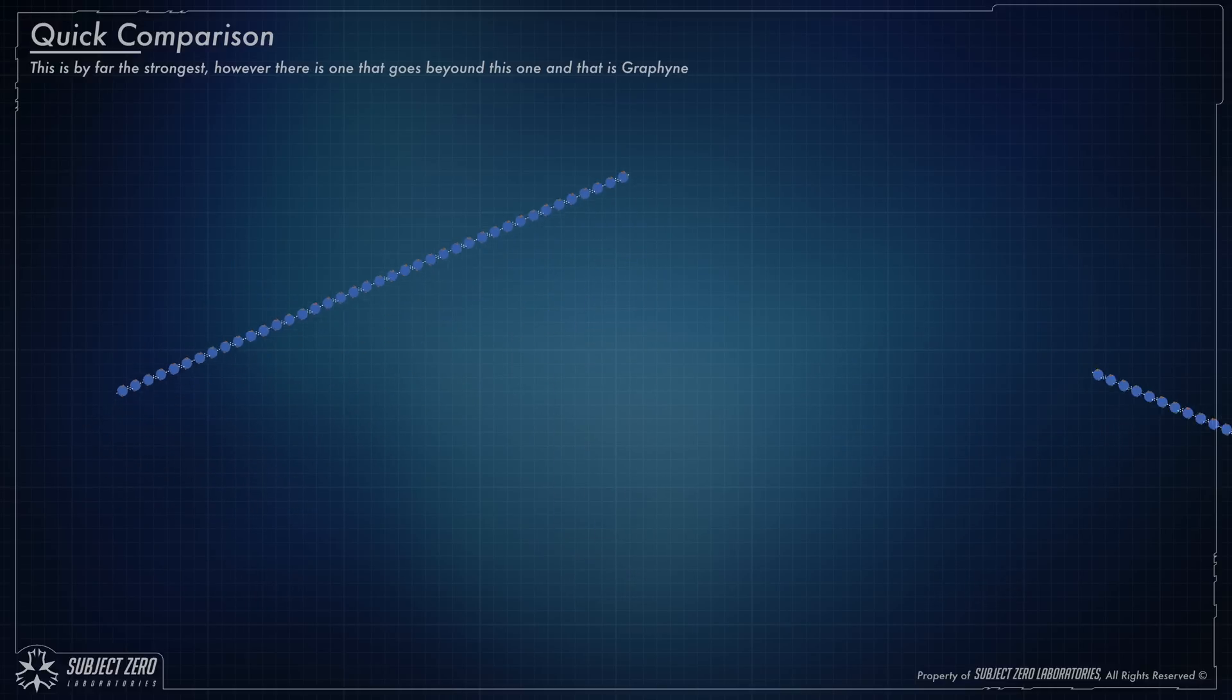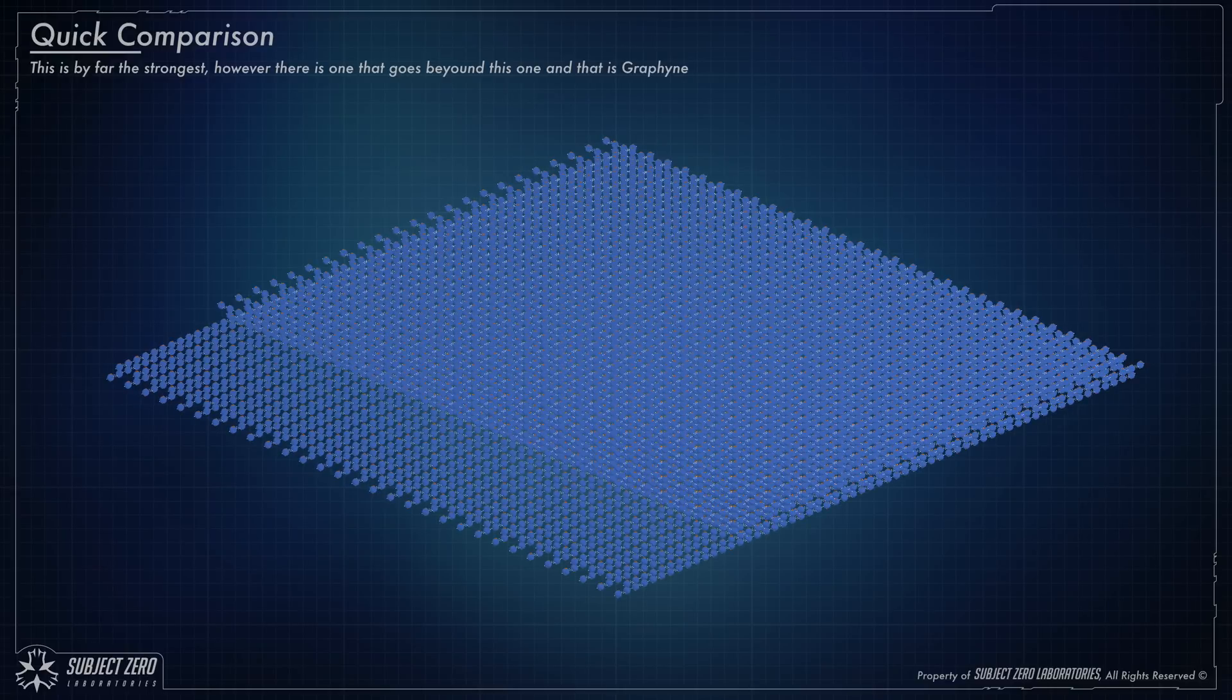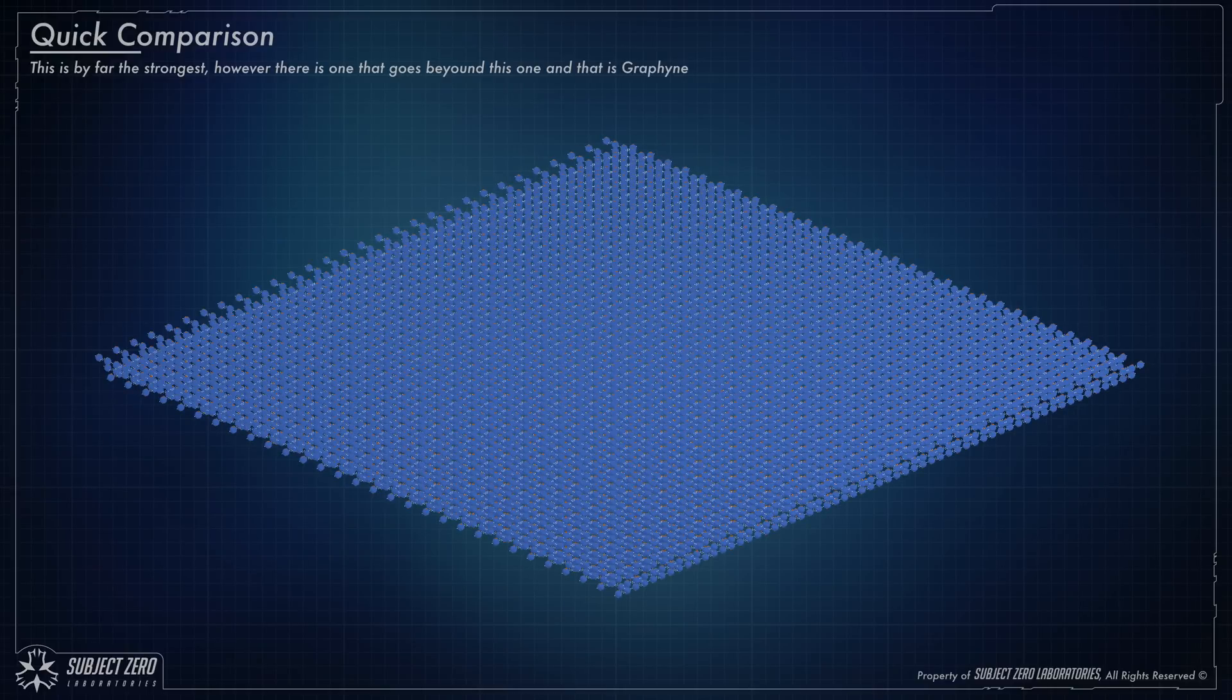Now, just think about this. If you make a fabric out of this material of the thickness of a hair, it would stop bullets with no problem. Well, not really, but it would do a much better job than graphene.